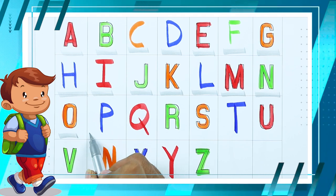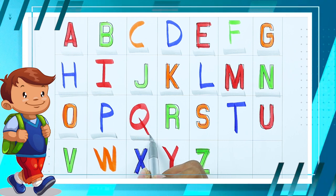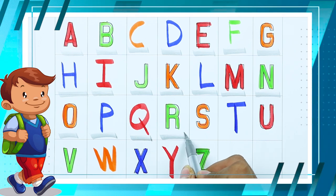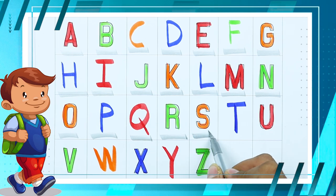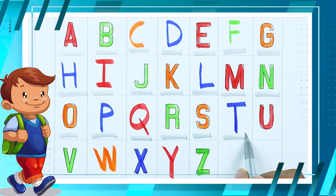O. O for octopus. P. P for parrot. Q. Q for queen. R. R for rabbit. S. S for sheep. T. T for tiger.